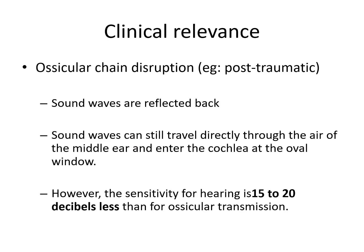Regarding clinical relevance: whenever there is trauma, post-traumatic ossicular chain disruption can occur — for example from a head injury — causing the malleus and incus to separate. Normally sound travels from the tympanic membrane to the oval window via the ossicular chain. With disruption, sound can still travel through the air in the middle ear to the oval window, but most sound waves are reflected back due to the impedance of the inner ear. As a result, the patient's hearing sensitivity is reduced by about 15 to 20 decibels compared to a person with an intact ossicular chain.